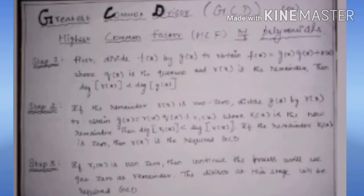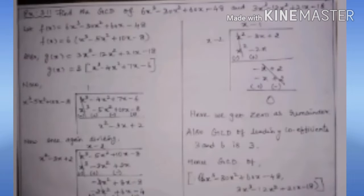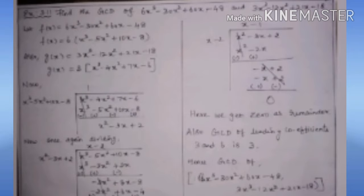Now we will move on to the sums. Example 3.11: Find the GCD of 6X³ − 30X² + 60X − 48 and 3X³ − 12X² + 21X − 18. I will name the first expression as F(X) and the second as G(X). The highest degree term is X cube with coefficient 6, and we should not have that coefficient, so we take 6 outside: F(X) = 6(X³ − 5X² + 10X − 8).